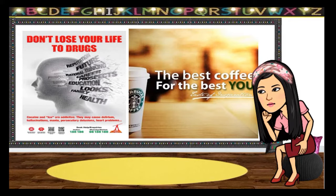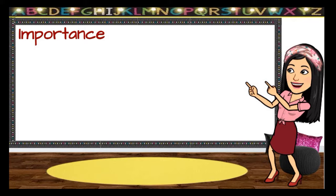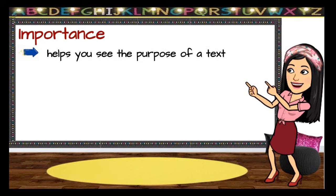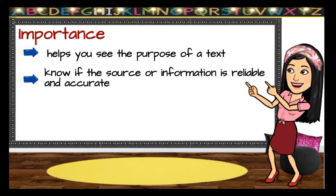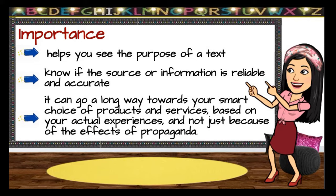Why is it important for us to know how to detect bias and propaganda devices? Learning how to recognize word choices to detect biases and propaganda devices used by speakers, writers, or advertisers is very important. Since biased information and propaganda devices are used to influence people to believe, buy, or do something, knowing this helps you see the purpose of a text, know if the source or information is reliable and accurate, and it can go a long way towards your smart choice of products and services based on your actual experiences and not just because of the effects of propaganda.